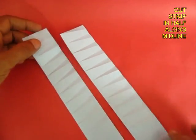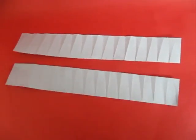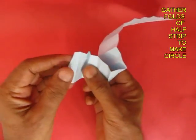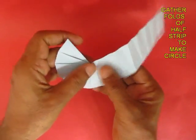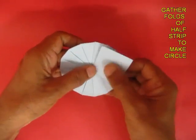Take only one section and once again gather the folds. It will fold into a very neat circle.